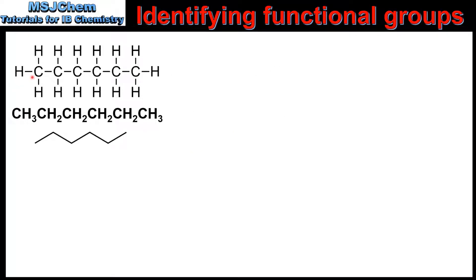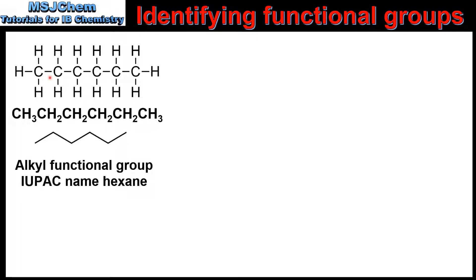In our first example we have a compound made up of carbon and hydrogen atoms only, with carbon atoms bonded by single covalent bonds. Looking at the full structural formula, the functional group is the alkyl group. In the condensed structural formula, the carbons at the end are bonded to three hydrogen atoms and the other carbons to two. Each carbon atom is bonded to the maximum number of hydrogens, therefore this is an alkane with the alkyl functional group.